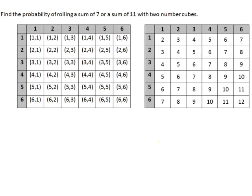Now we'll look at tables representing rolling two number cubes. The table on the left shows the various rolls you can get, and the table on the right shows the sums of those rolls. We're going to find the probability of rolling a sum of seven or a sum of eleven, focusing on the right-side table. A sum of seven appears six times, and a sum of eleven appears twice.